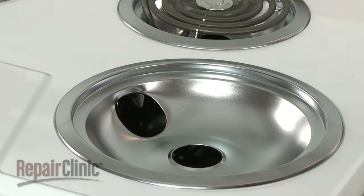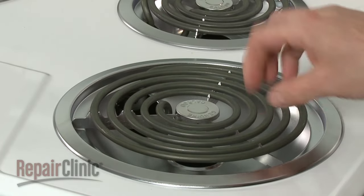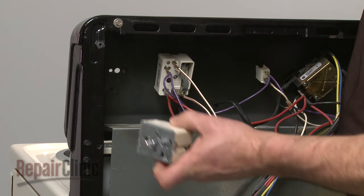If your cooktop has another identically sized element, try substituting it in the receptacle. If the newly installed element won't turn off, then the switch is probably at fault.